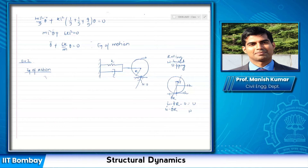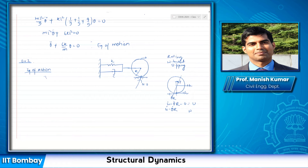Student Mohit partially completed the problem and got: (3/2)mr²θ̈ + cθ̇r + krθ = 0. The instructor confirms that is absolutely correct — that is the final equation of motion. Mohit was simply unsure, but the answer is right.